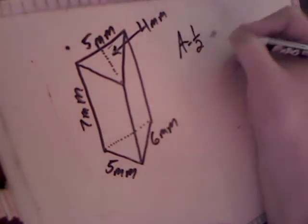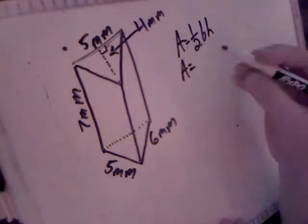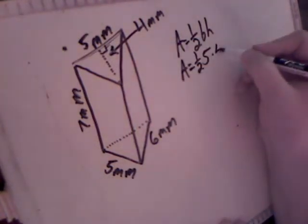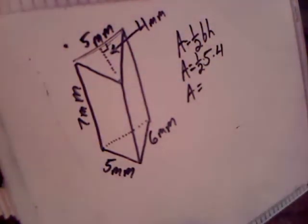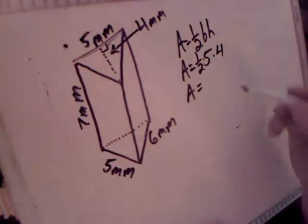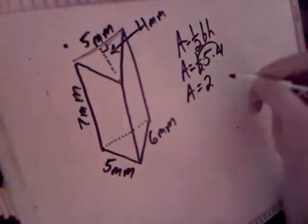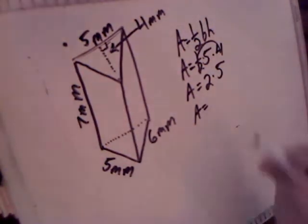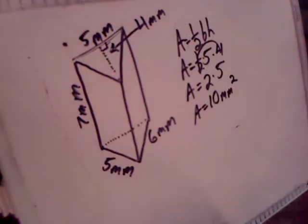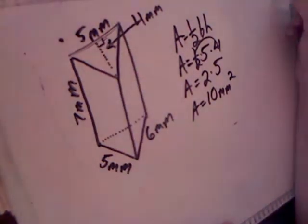The area of a triangle is ½ times base times height. In this triangle, the base is 5 and the height is 4. Because I can change the order of multiplication, I'm going to multiply 4 times ½ because half of 4 is 2. That's easier than dealing with the 2.5 it would have been if we used the 5. So now we have A equals 2 times 5. The area of that one triangle is 10 millimeters squared. Double it to find the area of the other triangular base — so we have 10 and 10.